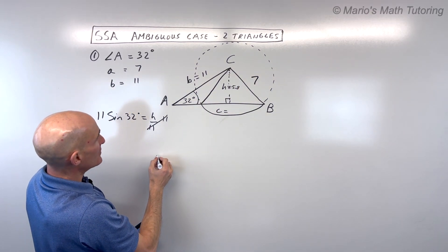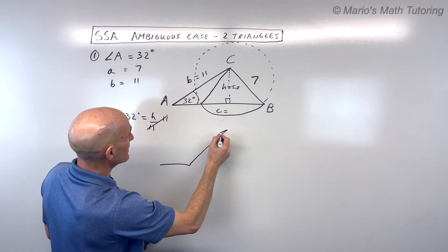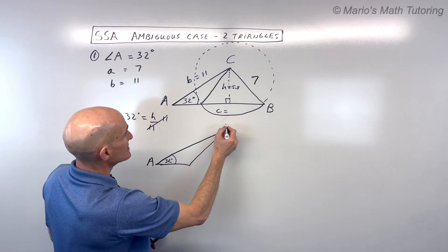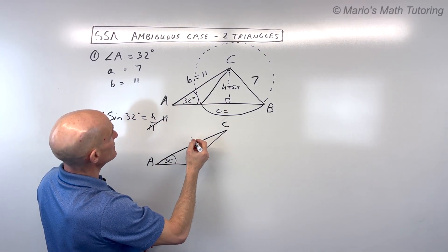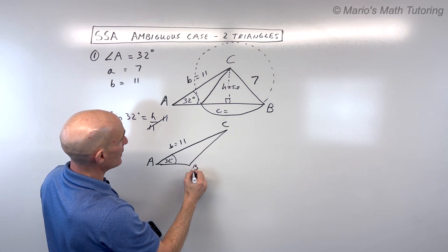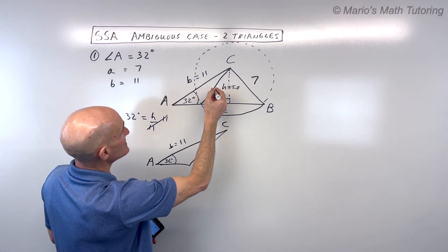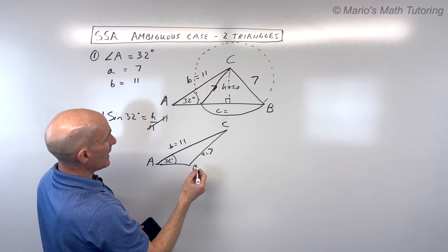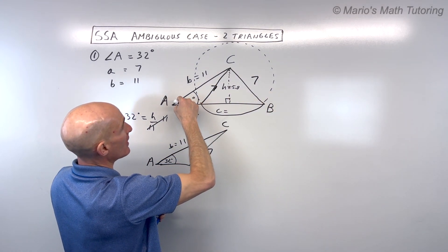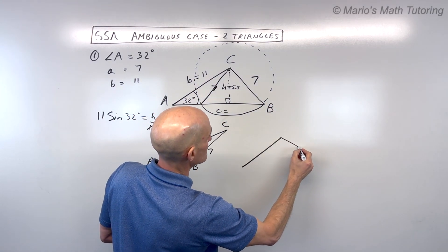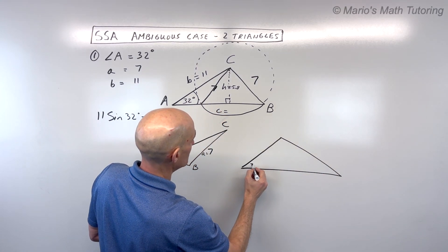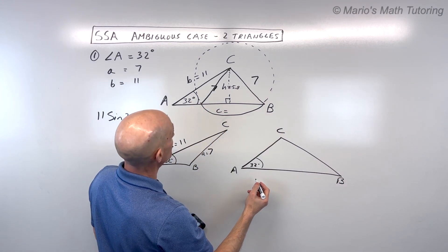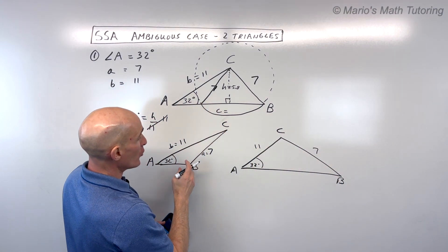Let me draw both triangles. The first (rotated) triangle has angle A at 32 degrees, vertex C at the top, side B of 11, angle B, and side A of 7 — that's the small triangle. The original triangle looks similar: angle A at 32 degrees, angle C, side C, side B of 11, and side A of 7. Those are our two triangles.